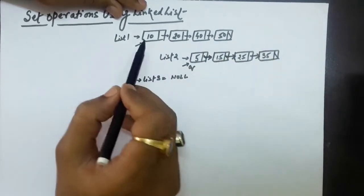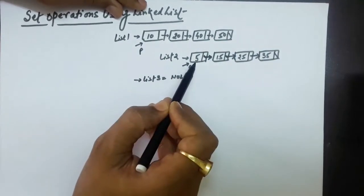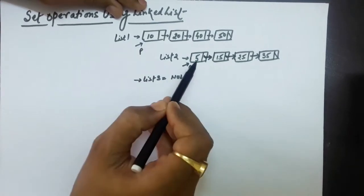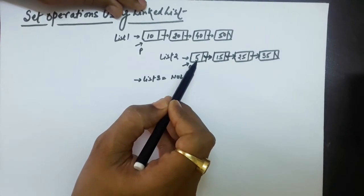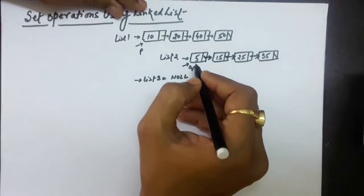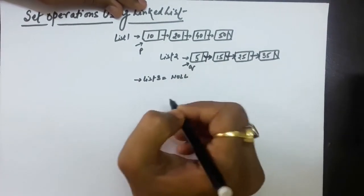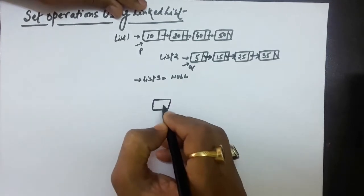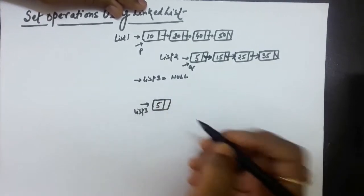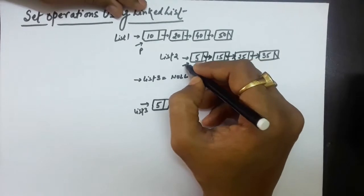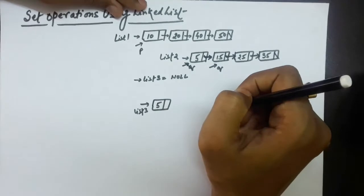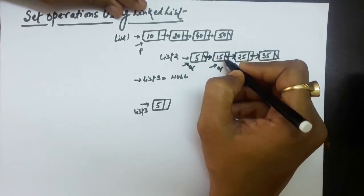Then we are going to compare the information of the p node and q node — the current node in the first linked list and the current node in the second linked list. Whichever information is smaller will be added in the final linked list. In this case, the information of this node is smaller, so that will be added in list 3. So list 3 now has 5.